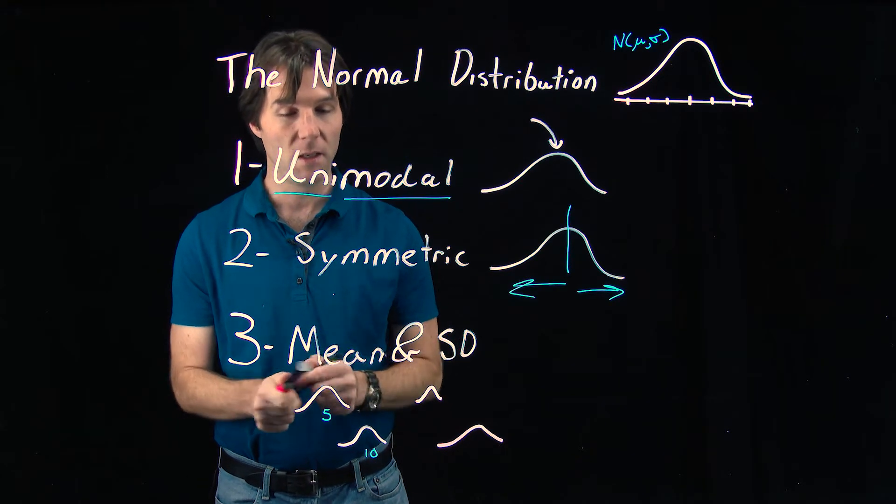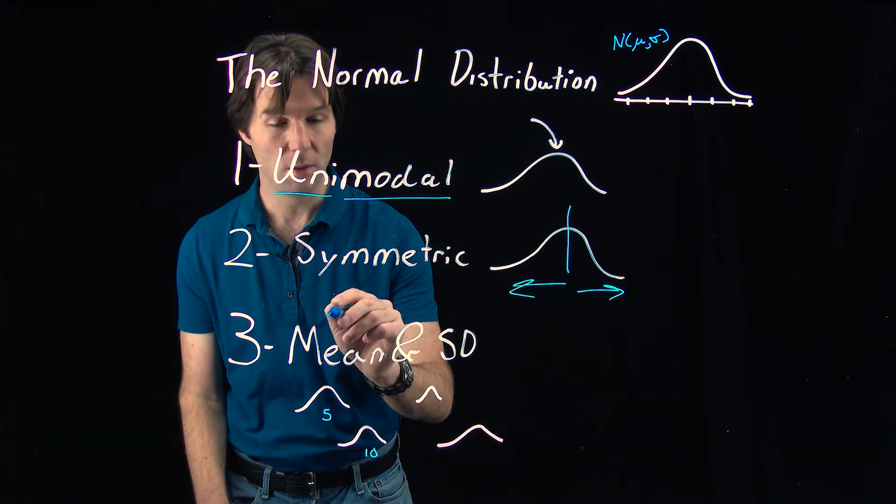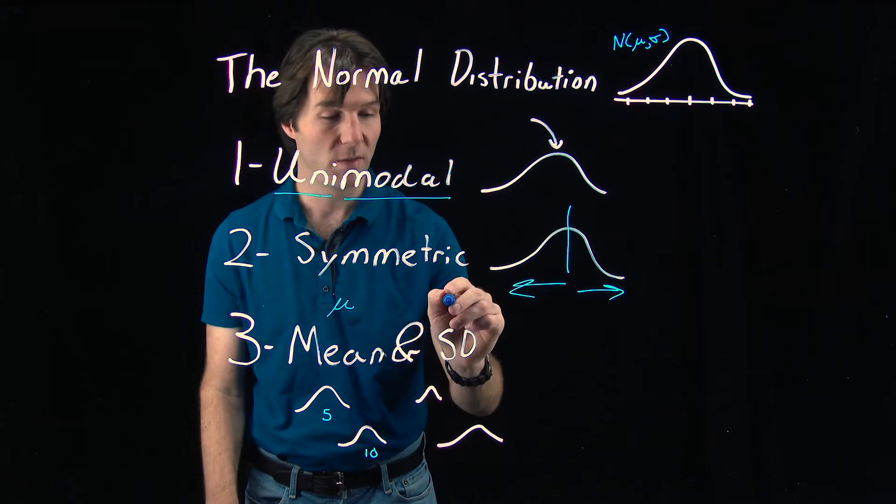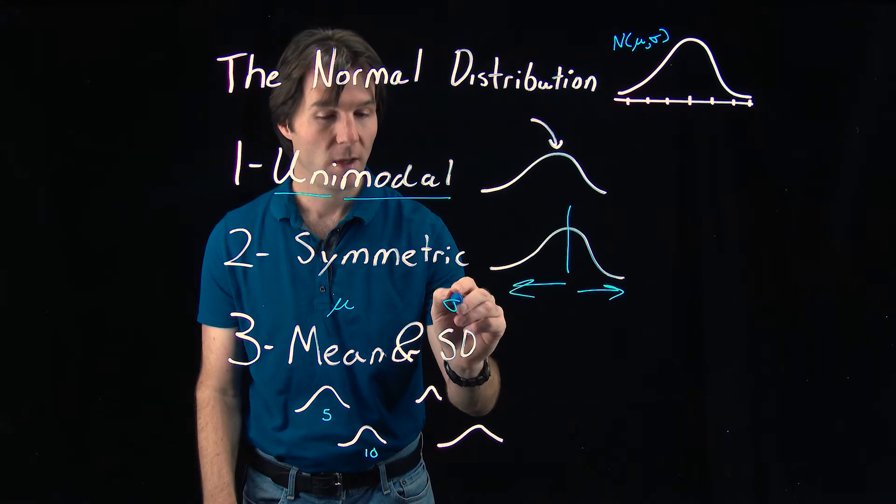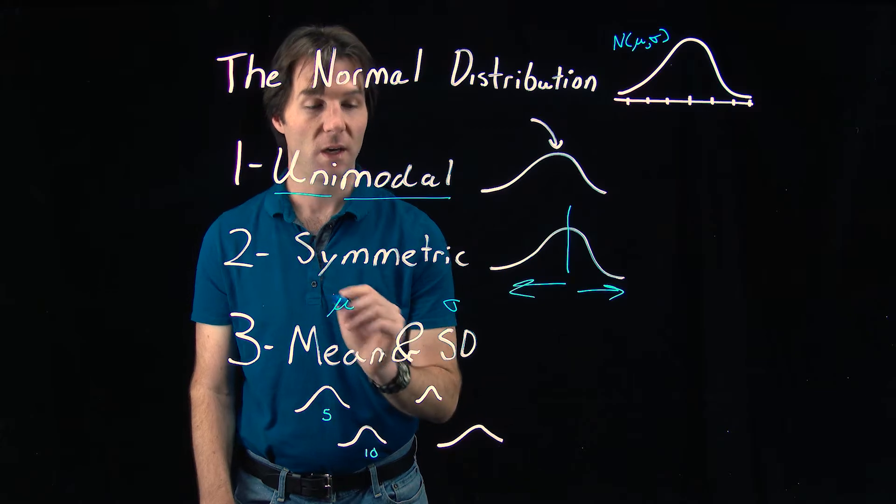So we often call the mean in population terms mu, and we call the standard deviation sigma. Both of these control the center and the spread of the curve.